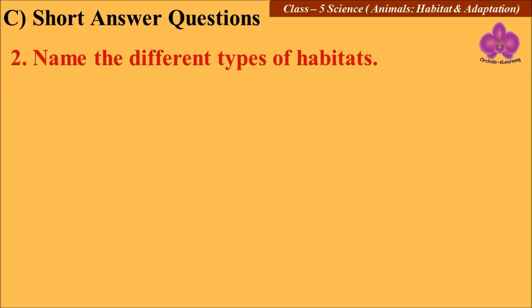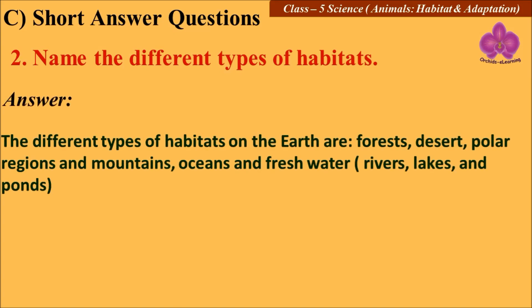Name the different types of habitats. The different types of habitats on the earth are forests, desert, polar regions and mountains, oceans and freshwater. Freshwater means rivers, lakes, and ponds.